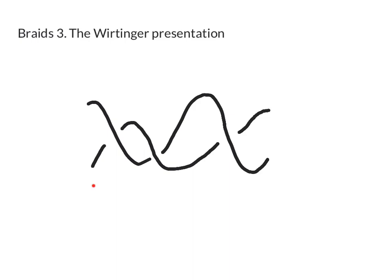So here's a braid. This is just a two strand braid, very simple. We have two strands weaving in and out of each other in the language of the previous couple of videos. This is sigma one cubed.